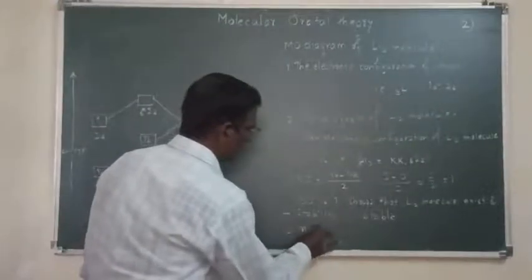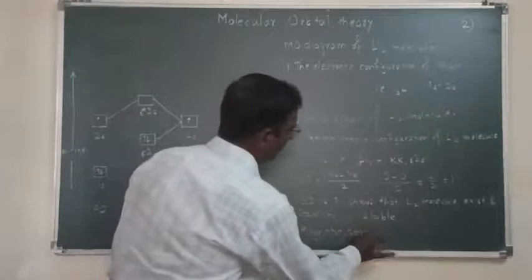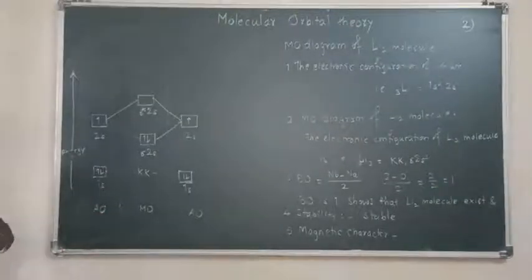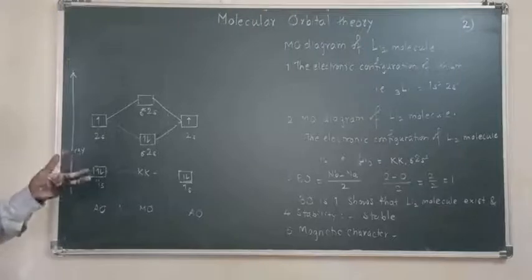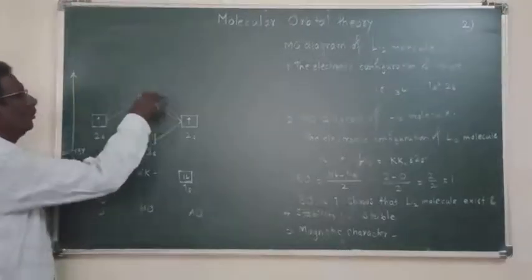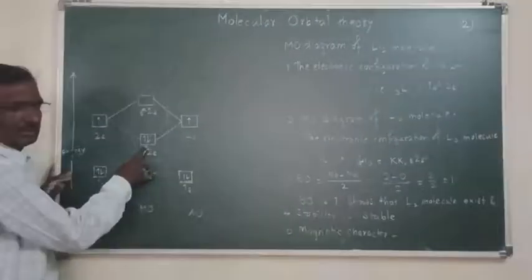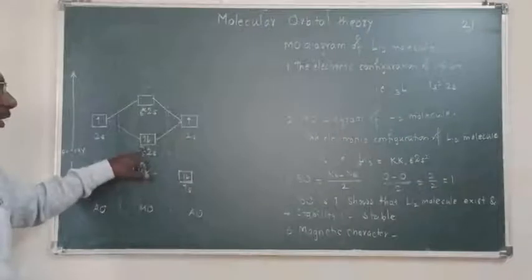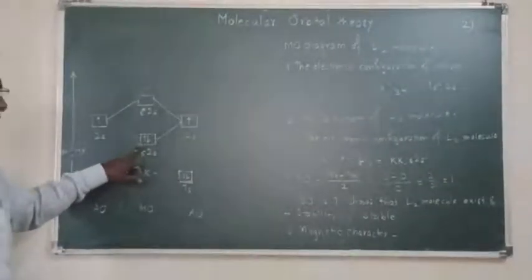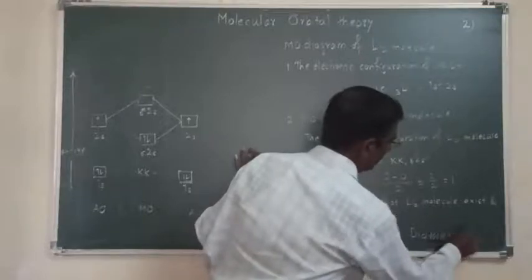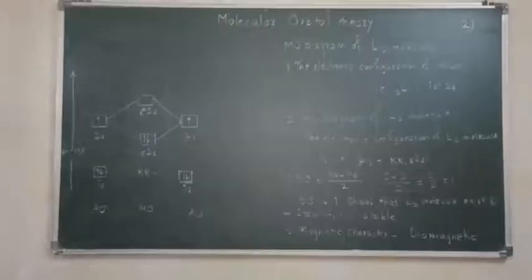The fifth point is magnetic character. Magnetic character depends upon the MO diagram. If all electrons in bonding and anti-bonding orbitals are paired, the molecule is diamagnetic. If there are unpaired electrons, the molecule is paramagnetic. In this case, all electrons in the bonding molecular orbitals are paired, so the Li₂ molecule is diamagnetic. This completes the explanation of the MO diagram of Li₂.